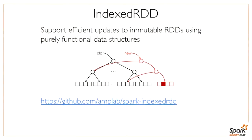To address time-varying graphs, the first step is to support efficient updates to RDDs. The issue is that RDDs are immutable, which is important for fault tolerance and correctness, but that makes it hard to support a streaming system with stateful modifications. The first effort is to support efficient updates to RDDs using some tricks and data structures, and there's an open source version of this you can currently use, with much faster improvements in the pipeline.